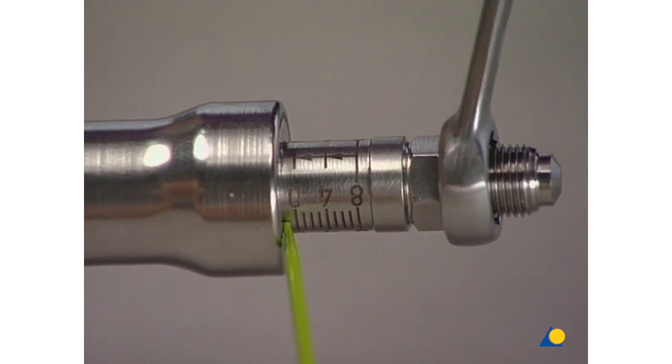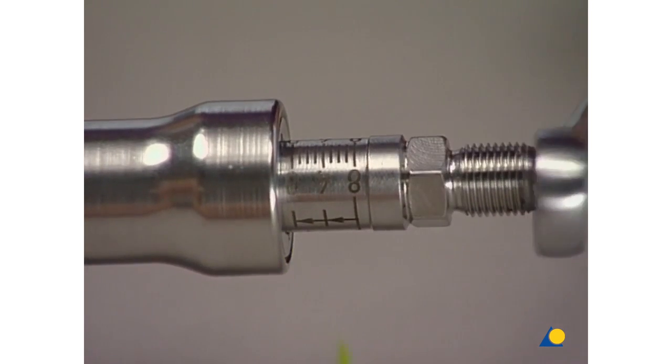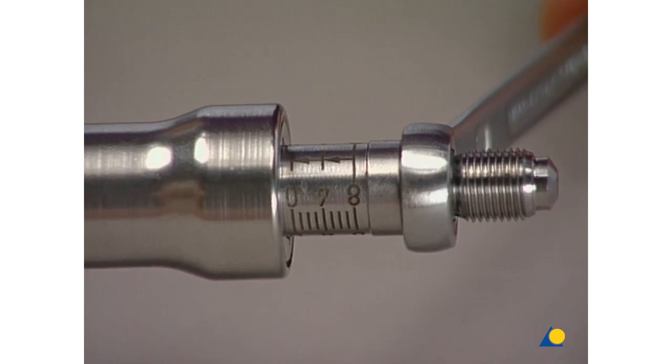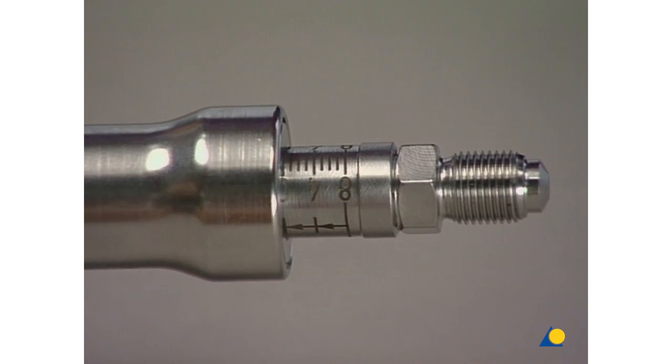Before inserting the nail, tighten the screw with the combination wrench up to the 0 millimeter mark. The maximal compression length is 8 millimeters.